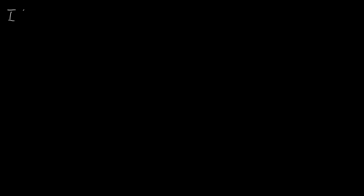The way we're going to do this is we're going to define an integral function I(a, b) as our integral, which is the integral from zero to infinity of (e^(−x^a) − e^(−x^b)) / x dx.